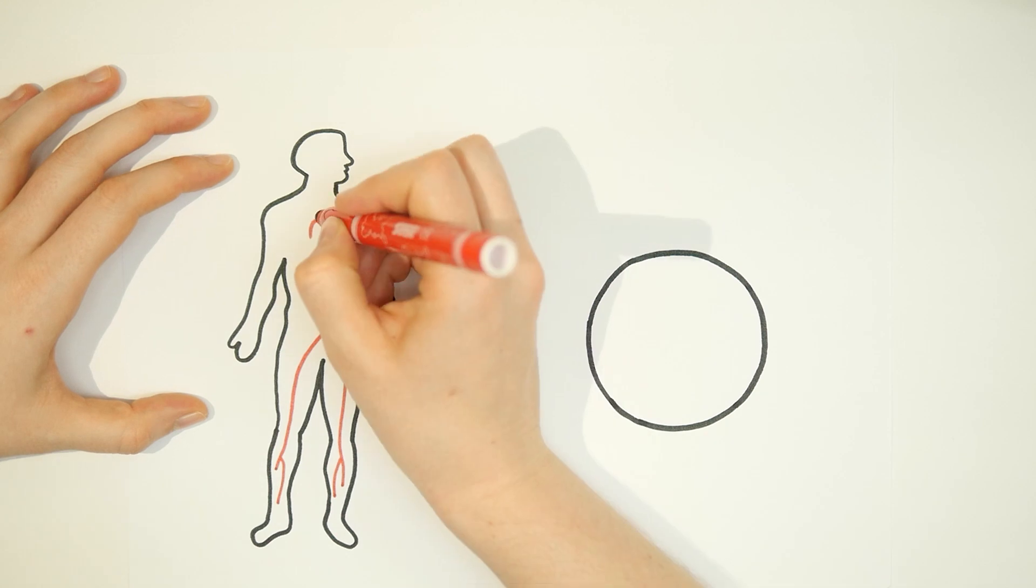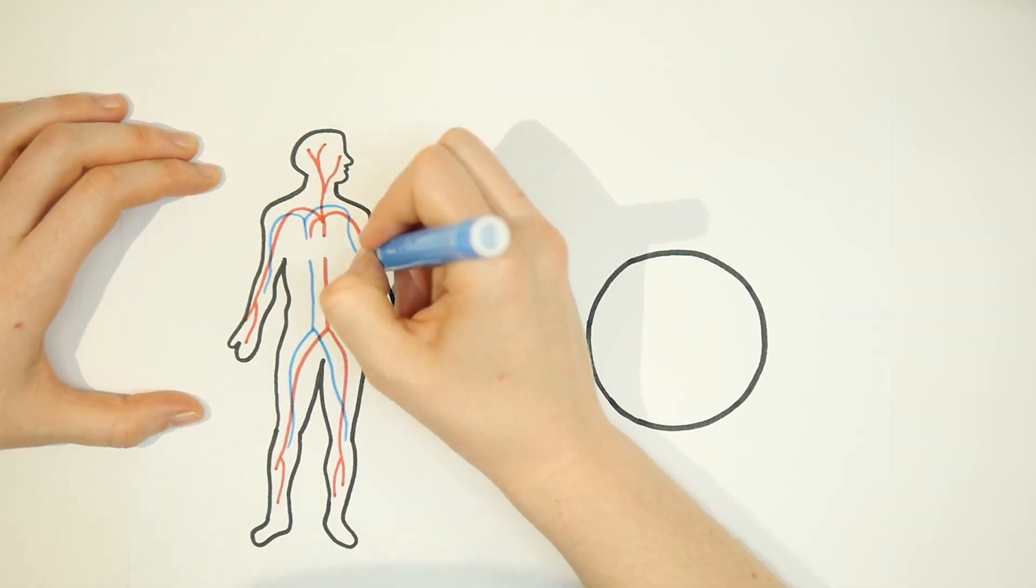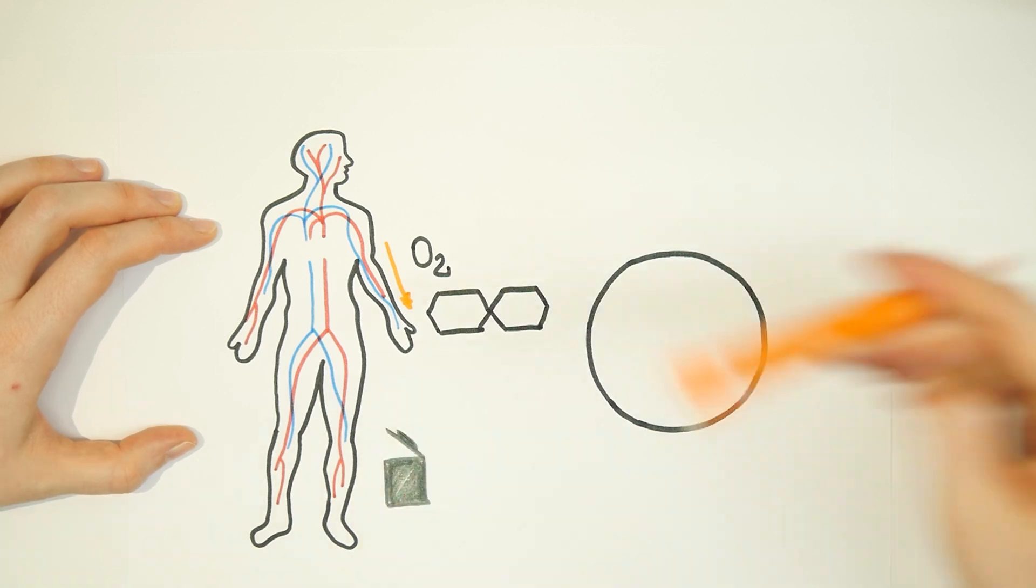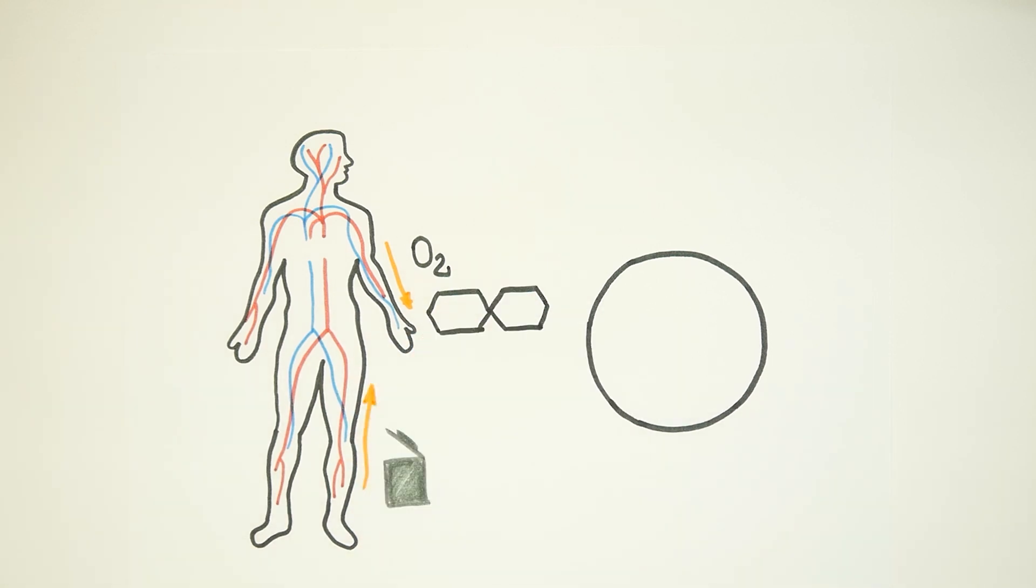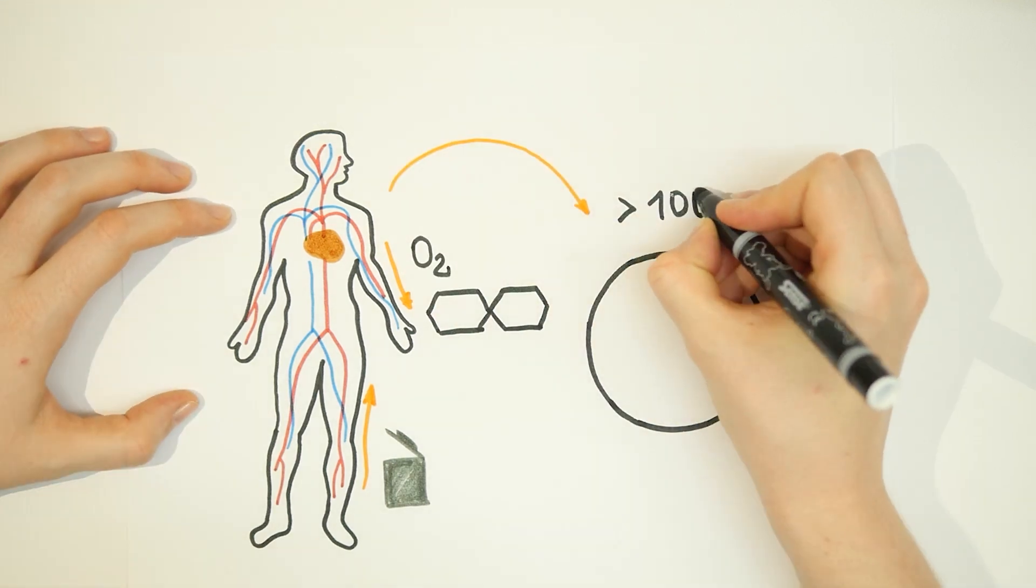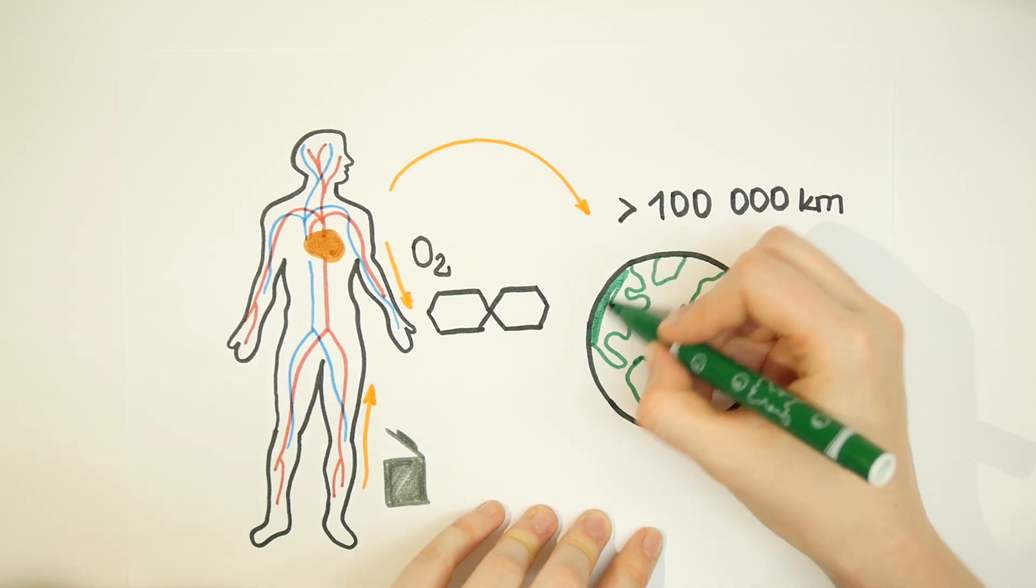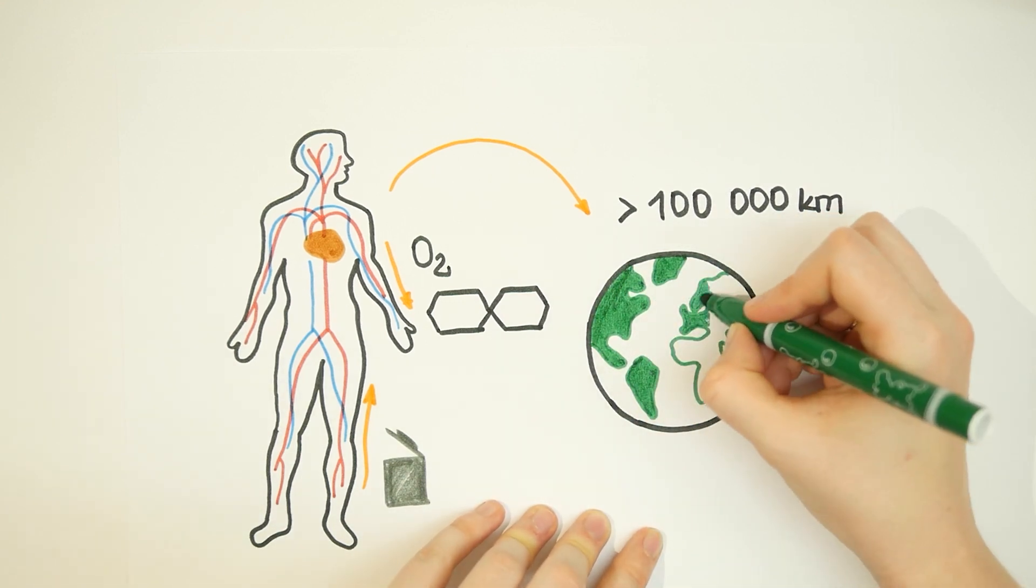Blood vessels are a transport system that supplies all cells of the body with oxygen and nutrients and removes waste products from the tissue at the same time, which makes them indispensable for life. The circulation of our over five liters of blood is powered by the body's hardest working organ, the heart. All blood vessels and small capillaries of one person combined have a total length of over 100,000 kilometers and could therefore circle our globe more than twice.